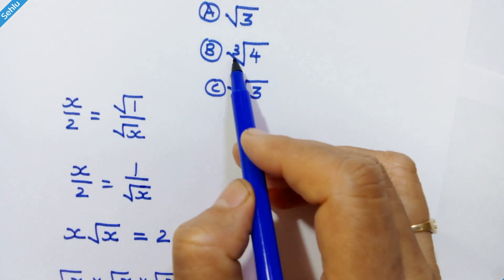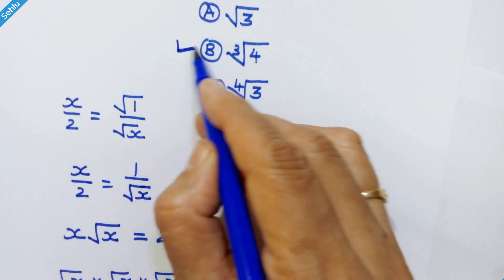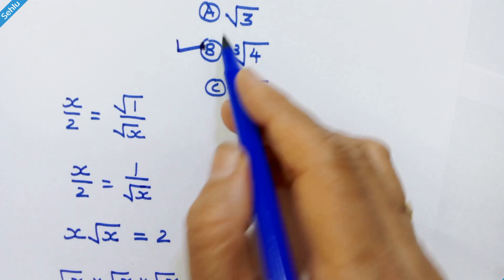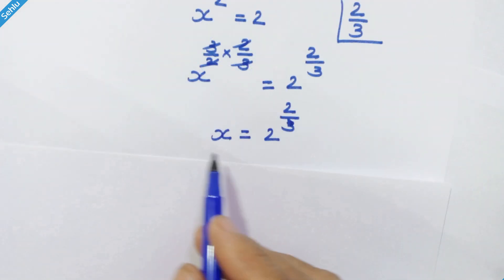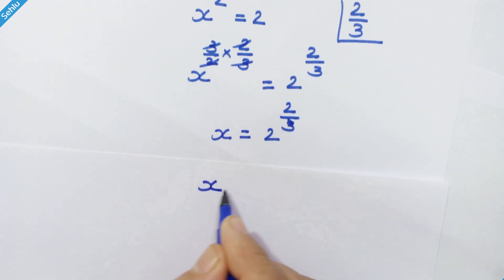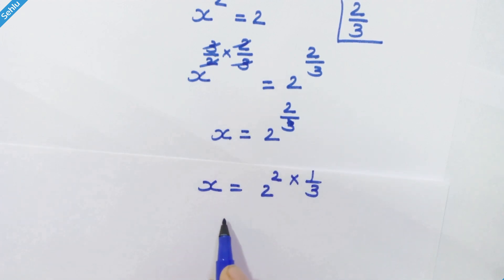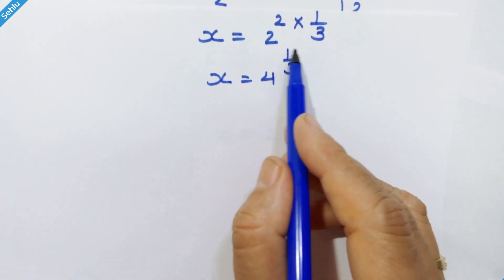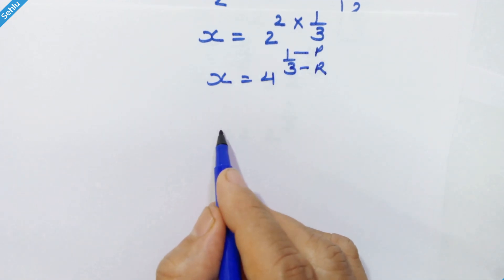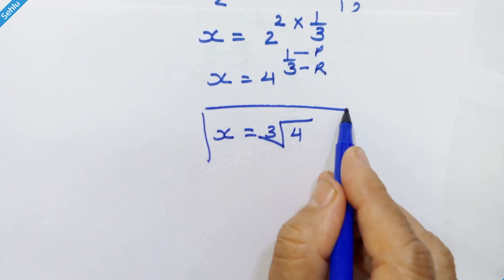Now let's see the options: option A is square root of 3, option B is cube root of 4, and option C is fourth root of 3. Option B, cube root of 4, is the right answer. We have x equal to 2 raised to 2 upon 3, which we can write as 2 squared raised to 1 upon 3. Since 2 squared is 4, x equals 4 raised to 1 upon 3, which is the cube root of 4.